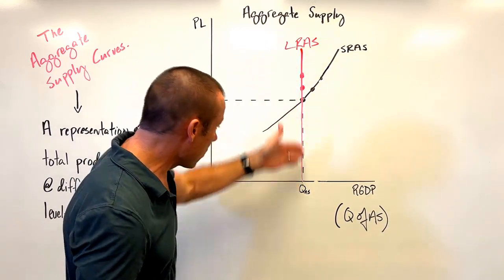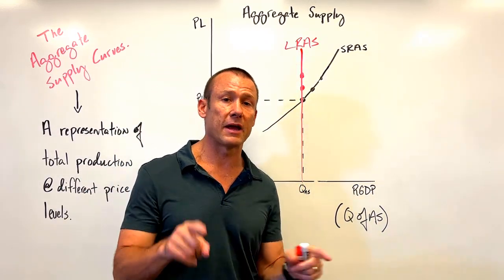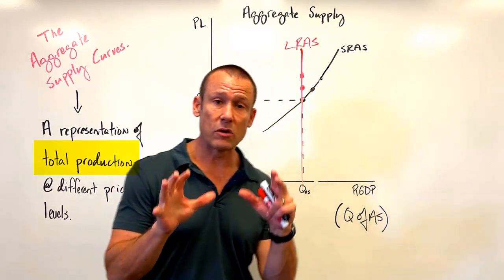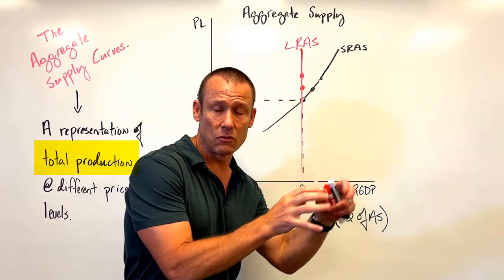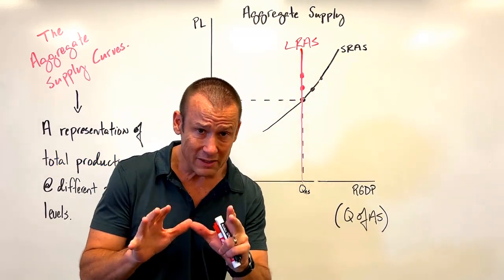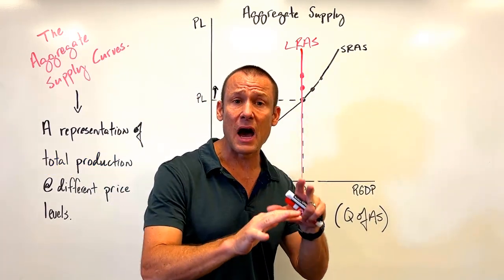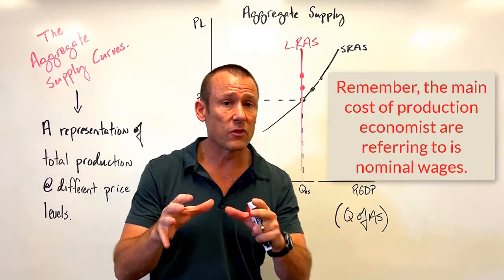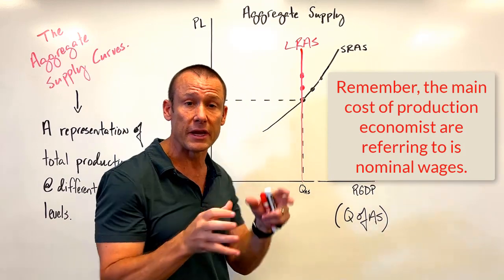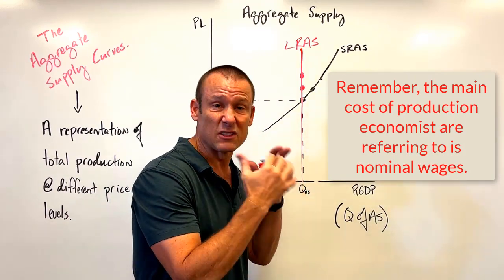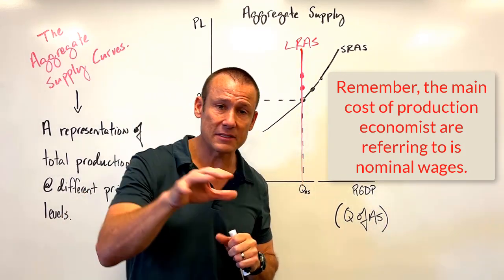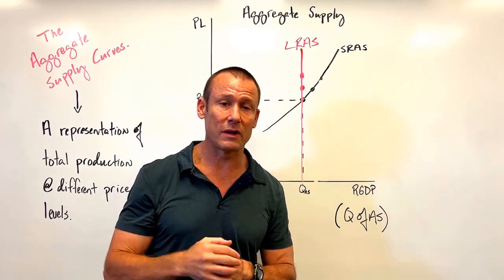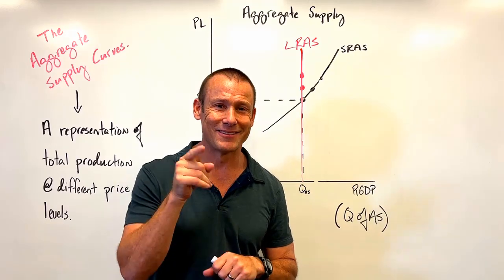Long-run aggregate supply — aggregate supply is total production. When we talk about it, we talk about it in the short run and the long run because there are two different time frames. One is when costs lag behind changes in the price of final goods and services; the other is the long run when costs change in proportion to those price changes. That's the aggregate supply curve — watch the video twice and you'll own it forever.